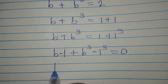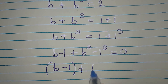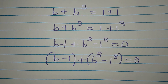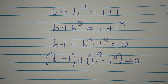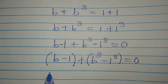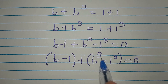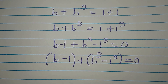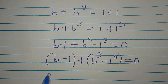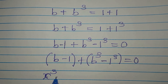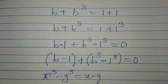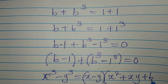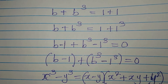From here we have b minus 1 separately, plus b to the power of 3 minus 1 to the power of 3, all equal to 0. We will handle b to the power of 3 minus 1 to the power of 3 using the difference of two cubes identity. If you have x to the power of 3 minus y to the power of 3, this equals x minus y, times x squared plus xy plus y squared.